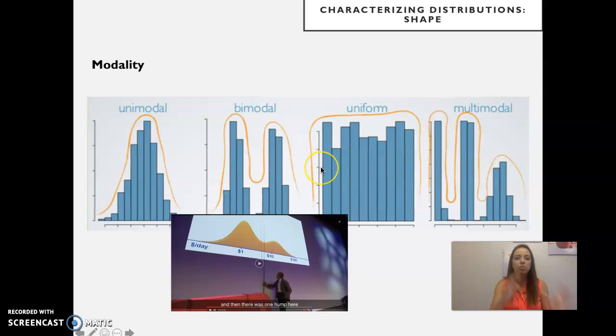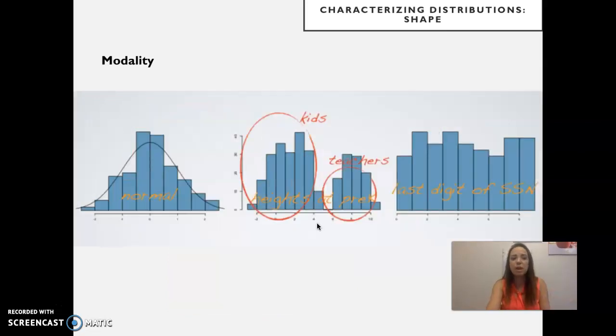So whenever you see more than one mode, you have to ask yourselves, am I looking at a distribution that includes two different groups that can't really be analyzed together, like the bimodal distribution of income? Another example would be if I look at heights of people in elementary schools, we would easily see a bimodal distribution, because you would have the kids with a shorter height, the peak at a shorter height, and the teachers representing the peak at a taller height. So you would have to consider, am I really looking at just one population, or are there two populations here that shouldn't be mixed up? So it's important to look at modality as well.